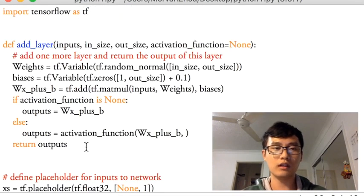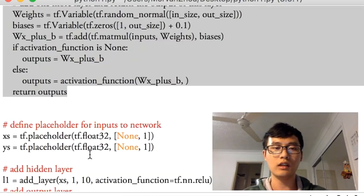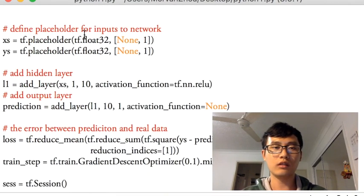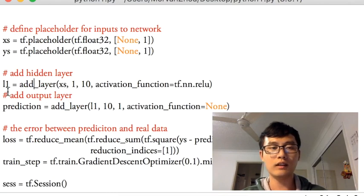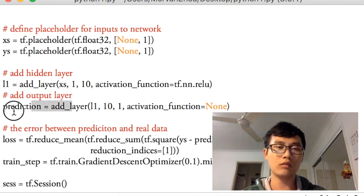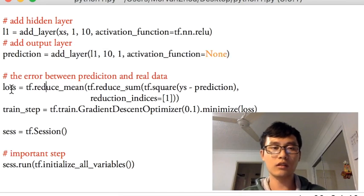This is the add_layer function which we defined several tutorials ago. Then we are going to add the placeholder over here and add one layer, layer_1, and one more layer for predicting and use the loss to reduce, use the gradient descent to minimize the loss.